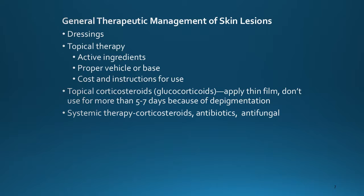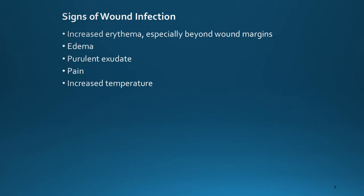Systemic therapy is also available, which could be corticosteroids, antibiotics, or antifungals. The classic signs of wound infection include increased erythema especially beyond wound margins, edema, purulent exudate, pain, and increased temperature.